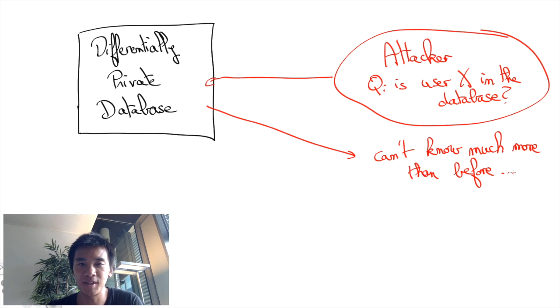The trick to guarantee this is to make sure that any public information released computed from the dataset would be essentially the same whether this particular person belongs to the dataset or not. In fact, this must hold for any person in the dataset.